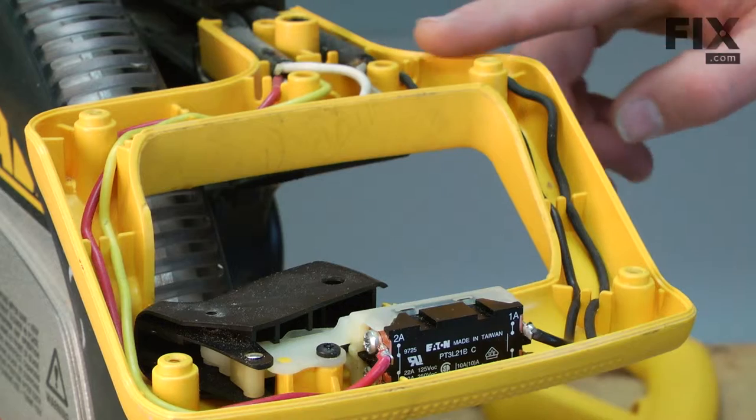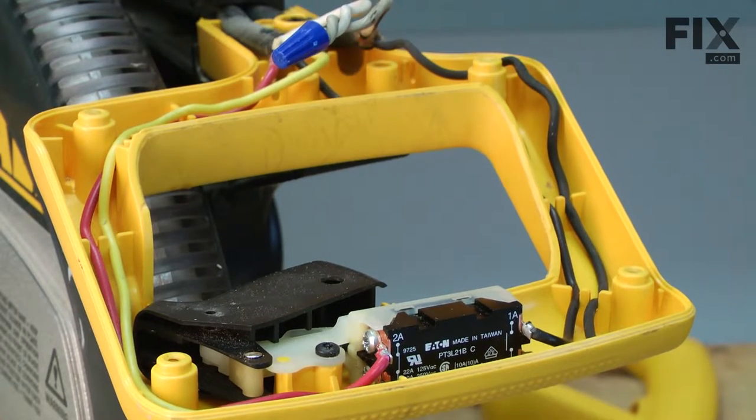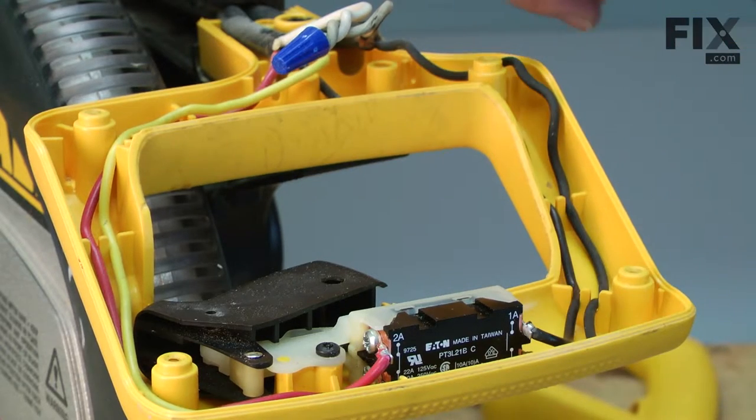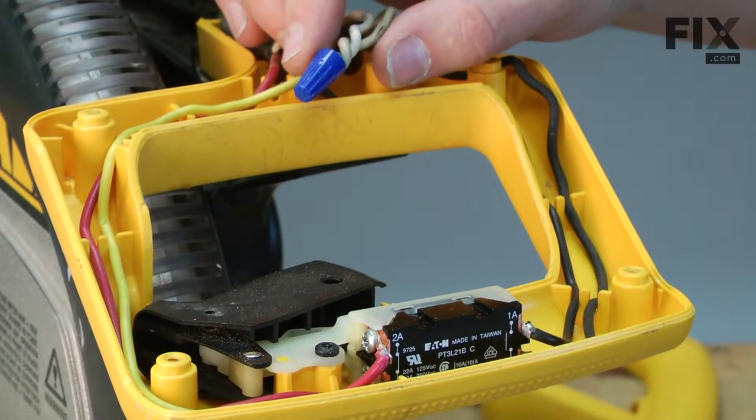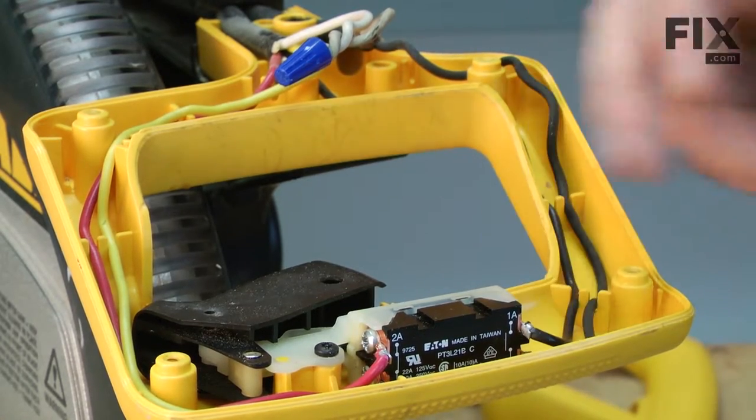With the top half of the handle out of our way, we now have access to the cord wires. We have the black wire that comes down to the switch and the white wires that are secured with a wire nut. I'll start by removing the switch and then the black wire from the switch.